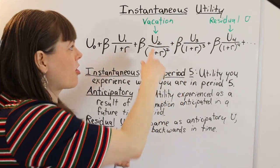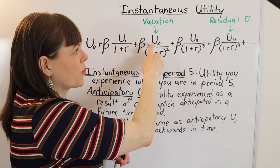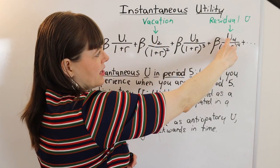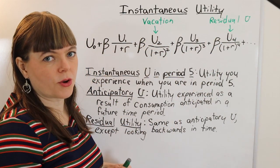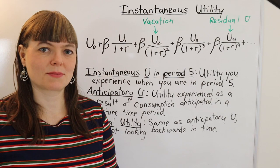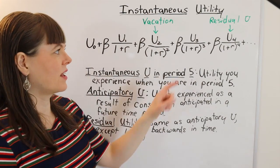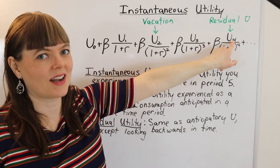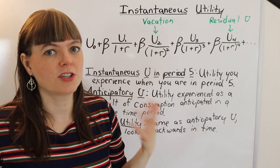However, both of those are about the utility that's instantaneous in period two. Whereas residual utility is experienced in a different period, looking back on time period two. So that's the way I like to explain the difference between residual utility and remembered utility is that it's experienced instantaneously in period four, it's not an assessment of the utility in period two.